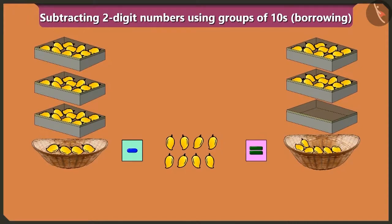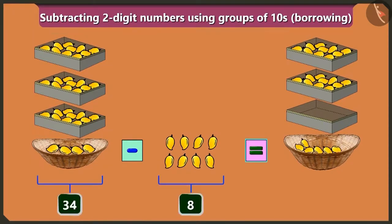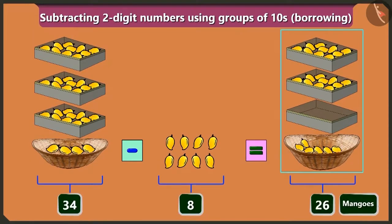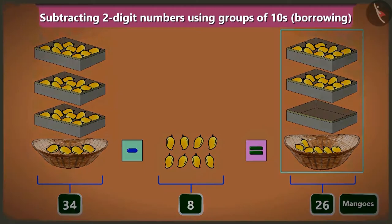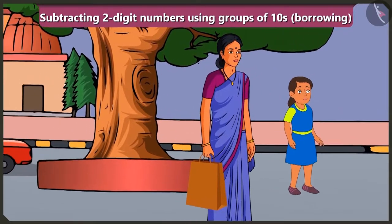So this way, thirty-four minus eight equals twenty-six mangoes, right? You are absolutely right, Bubbly. Come on, let us now go to buy milk. Let's go.